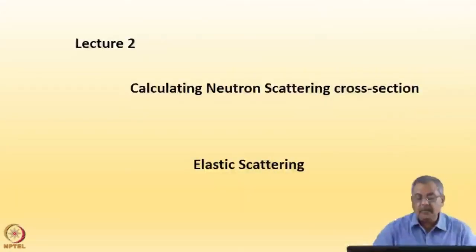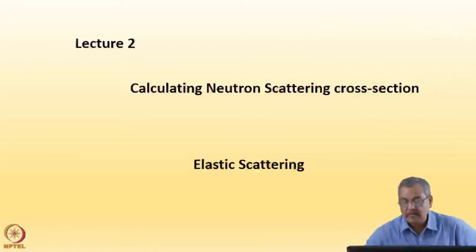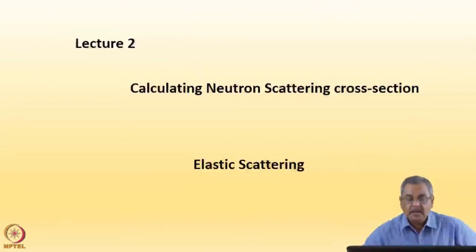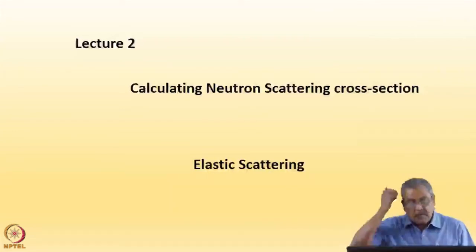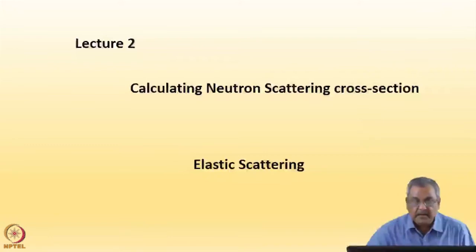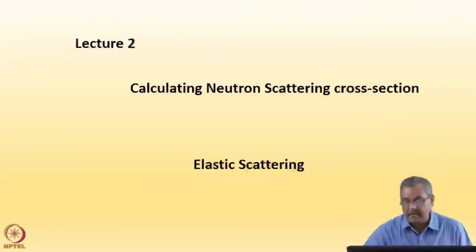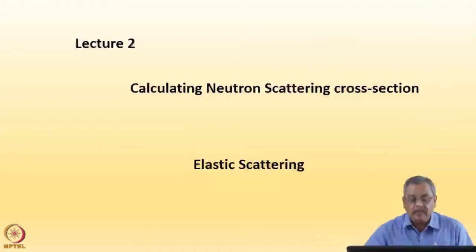In this lecture, I will be calculating the neutron scattering cross sections using Fermi's Golden Rule. I introduced you to neutrons in the previous lecture and mentioned all the desirable properties of neutrons that can be used for studying condensed matter structure and dynamics. I also showed you the various experimental facilities like reactors and spallation neutron sources. Today, I will give you the theoretical background of neutron scattering cross sections using Fermi's Golden Rule.